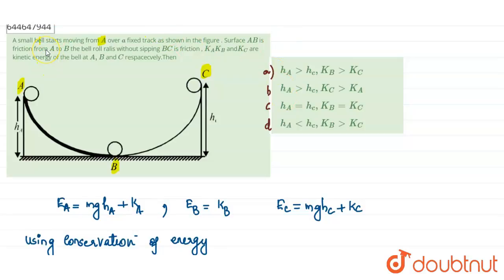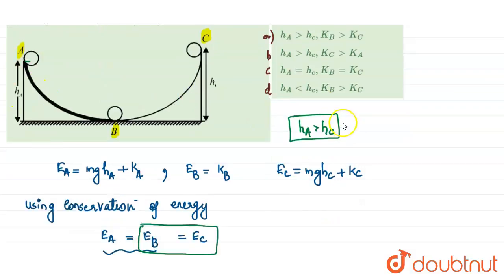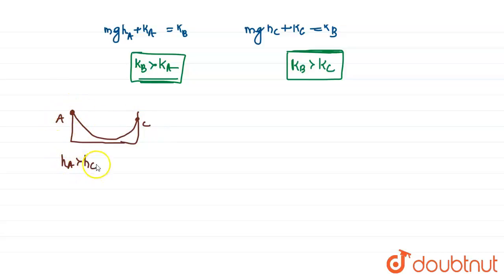Since the ball starts moving from A, the height of A must be maximum compared to the height of C. So height of A is greater than height of C. This is the second condition. We can redraw the diagram: the height of A is greater than the height of C. At A we have KA plus potential energy of A, and at C we have KC plus potential energy of C.